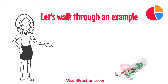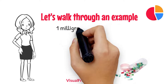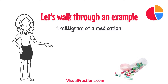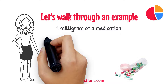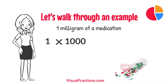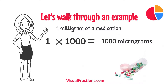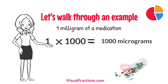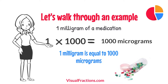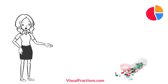Let's walk through an example. Say you have 1 milligram of a medication that you need to convert to micrograms. We start by multiplying 1 by 1000. This gives us 1000 micrograms. And that's it — 1 milligram is equal to 1000 micrograms.